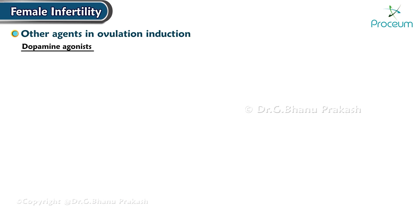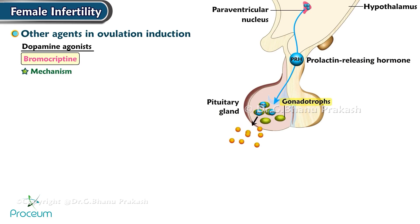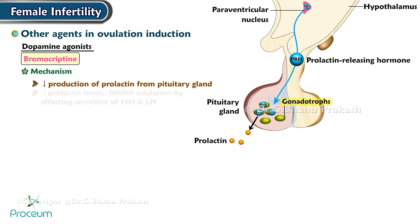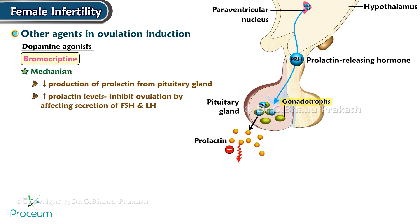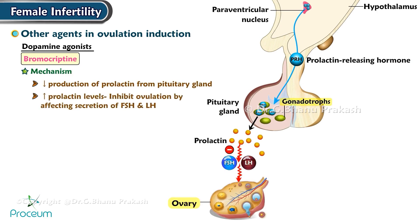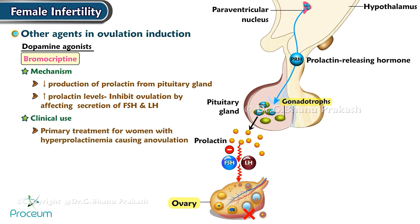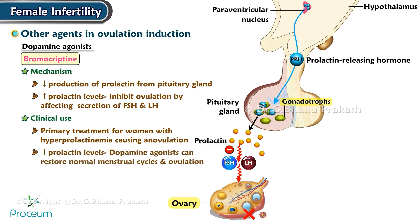Next we'll cover dopamine agonists — for example, bromocriptine. Mechanism: These agents decrease the production of prolactin from the pituitary gland. Elevated prolactin levels can inhibit ovulation by affecting the secretion of follicle-stimulating hormone and luteinizing hormone. Clinical use: Dopamine agonists are the primary treatment for patients with hyperprolactinemia causing anovulation. By reducing prolactin levels, dopamine agonists can restore normal menstrual cycles and ovulation.